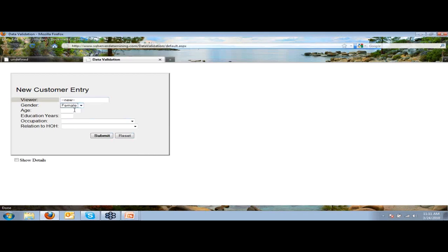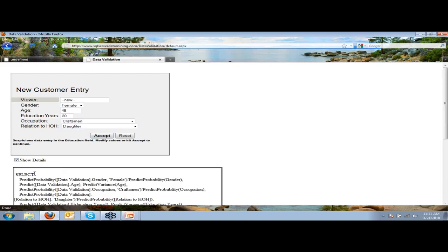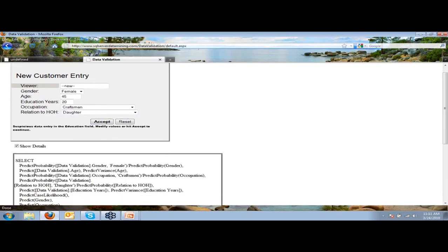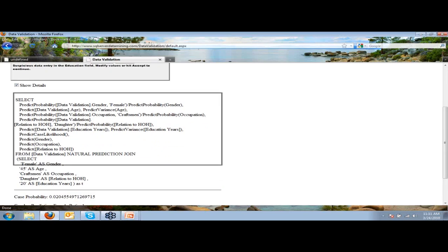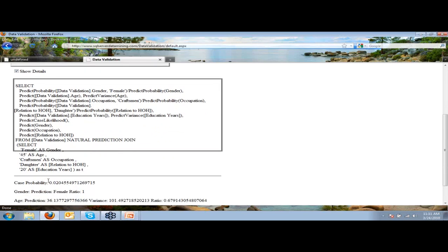So let's say, for example, we've got a female coming in who is 45 years old, has 20 years education. She's a manager and a craftsman. I'm sorry, has a relation to have a household with a daughter. Hit submit, and there's suspect data inside of this. This is actually the query that's being run right here. It's a DMX query, and we'll come back to this one later. But just note, it's saying that this is highly improbable, about 2% chance of this actually being a valid record.